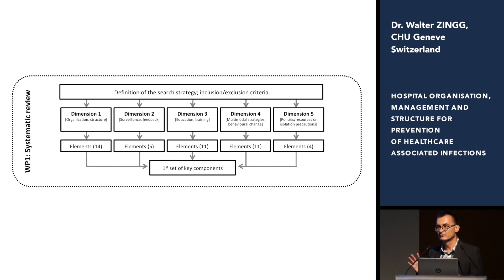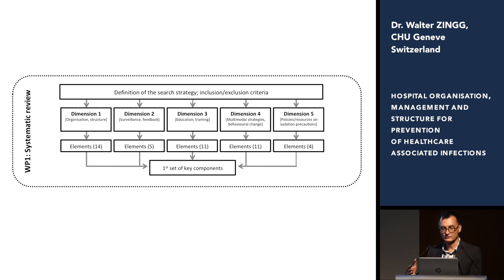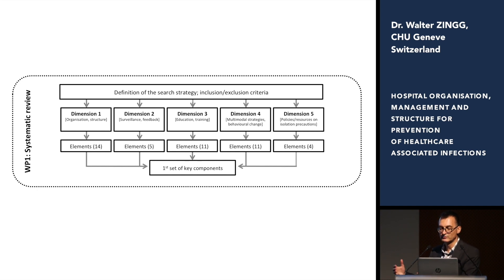The idea was initially to have five dimensions: a dimension about organization and structure of infection prevention and control, the second was everything about surveillance and feedback, the third about education and training, then everything about multimodal strategies, basically everything in the context of behavioral change, and policies, resources, isolation precautions — more or less a pot with the rest of strategies.